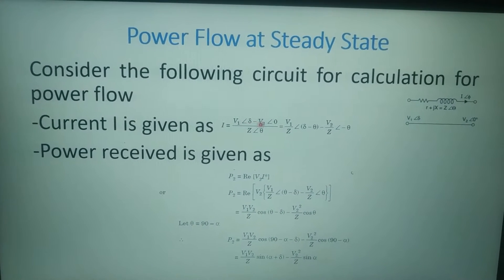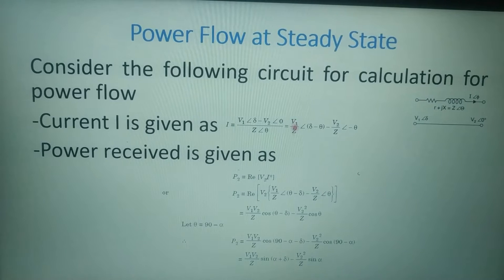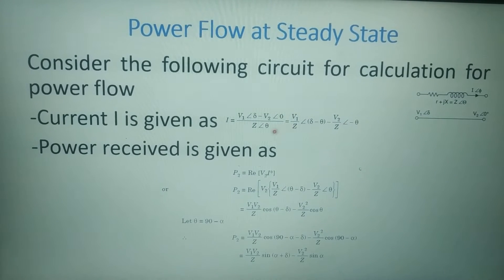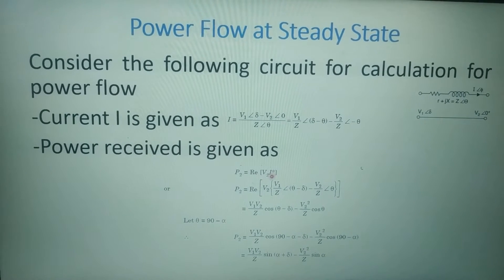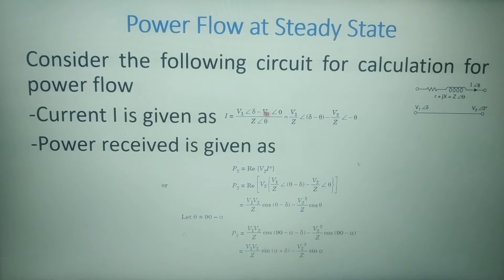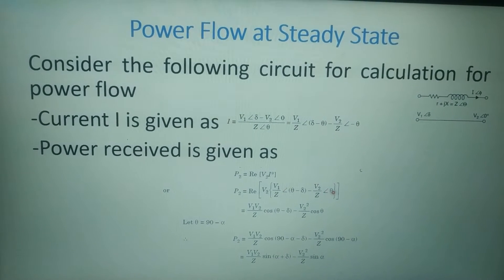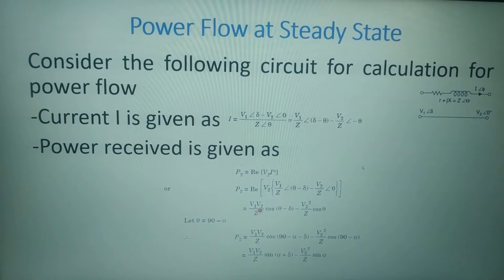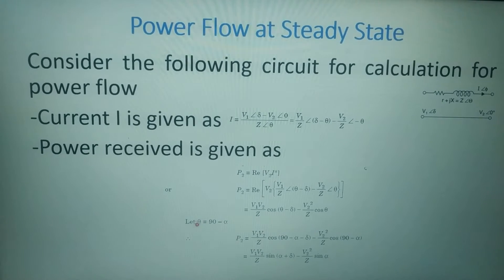From this circuit, current I can be calculated as V1 minus V2 upon Z. If we simplify it, we get V1 upon Z angle (delta minus theta) minus V2 upon Z angle (minus theta). So power at the receiving end is given by P2 equal to the real part of V2 into I conjugate. Substituting the value of I, we get P2 equal to V1*V2 upon Z cos(theta minus delta) minus V2 squared upon Z cos(theta).